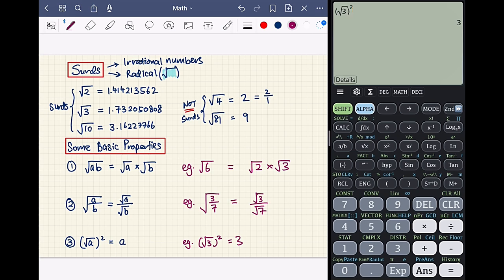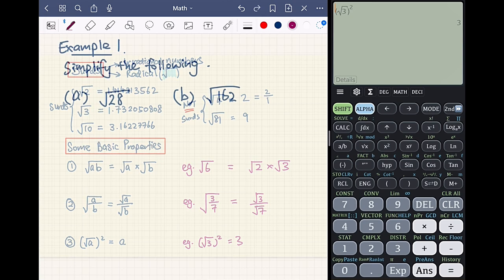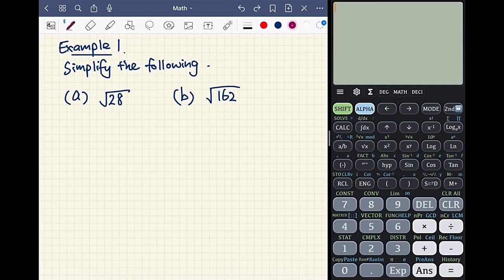Next, we will look at how to simplify surds. In example 1, we have to simplify the following: part A, square root of 28, and part B, square root of 162.